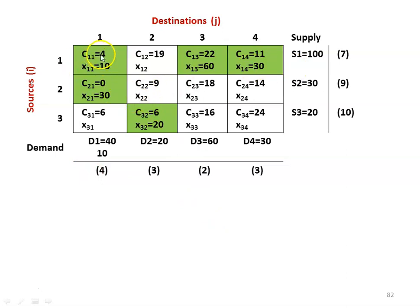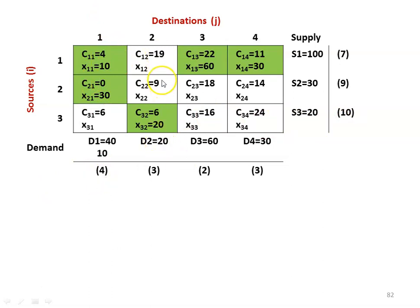For row 1: minimum 4, next minimum 11, difference 7. Row 2: 0 and 9, difference 9. Row 3: 6 and 16, difference 10. Column 1: 0 and 4, difference 4. Column 2: 6 and 9, difference 3. Column 3: 16 and 18, difference 2. Column 4: 11 and 14, difference 3.